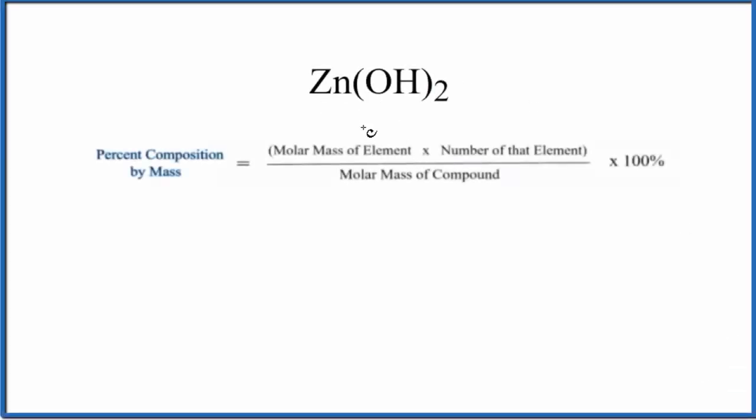In this video we'll find the percent composition by mass for each element in Zn(OH)2, this is zinc hydroxide. The first thing we need to do is calculate the molar mass for zinc hydroxide. We go to the periodic table.